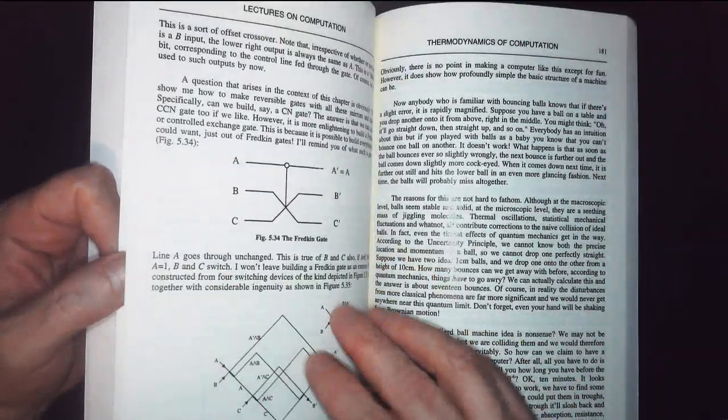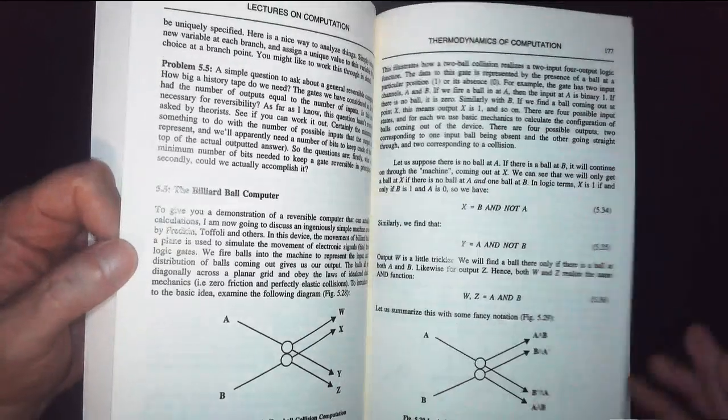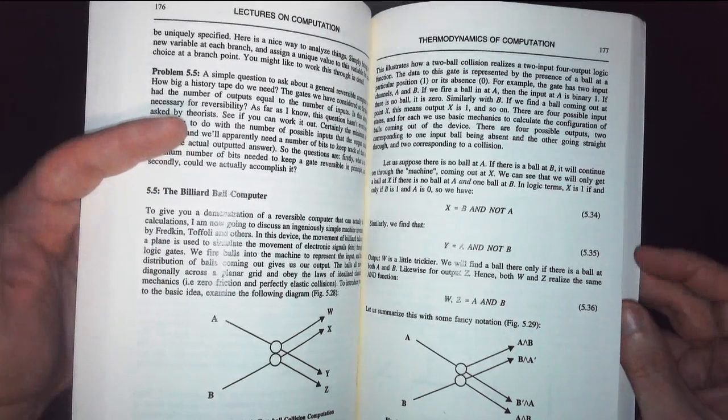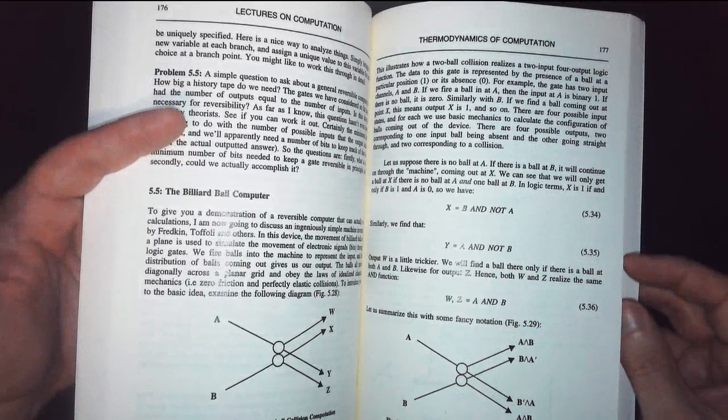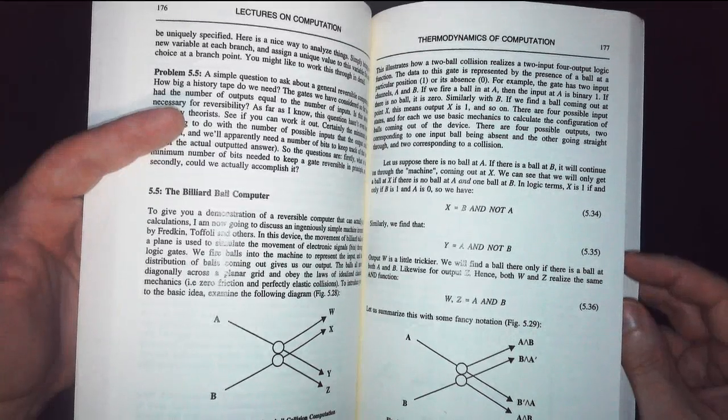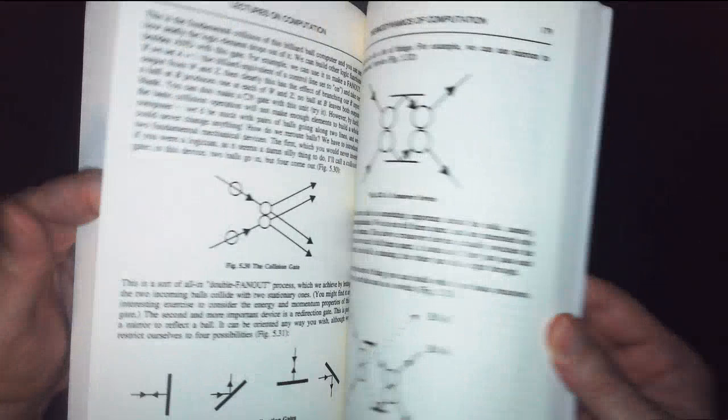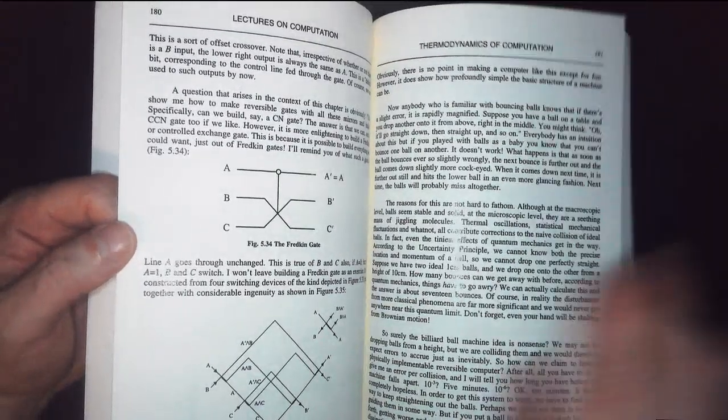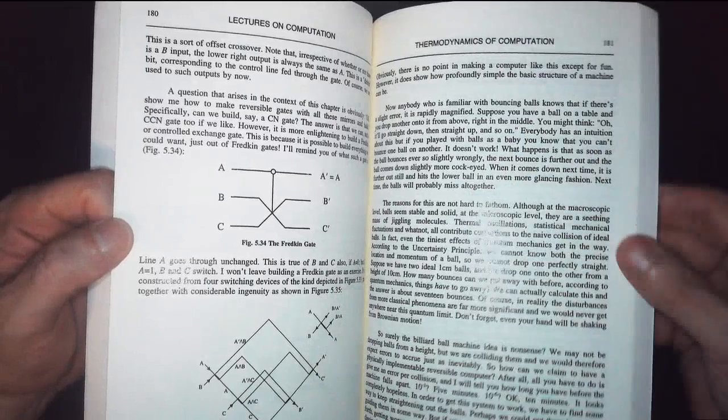There's our billiard ball computer. So I overdid it. A or B or, yeah, these are all ands. A and B, A, B and, not A, not B and A, and A and B. So we have our different states coming out. Very interesting. You can see how this is working.